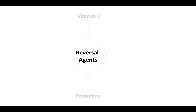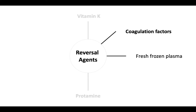Next are the coagulation factors. These are most commonly given as fresh frozen plasma, which provides factors 2, 5, 8, 9, 10, 11, and antithrombin. Coagulation factors are also available as prothrombin complex concentrates. The three-factor concentrates have factors 2, 9, and 10, while the four-factor concentrates include factor 7. Prothrombin complex concentrates can be activated or unactivated.